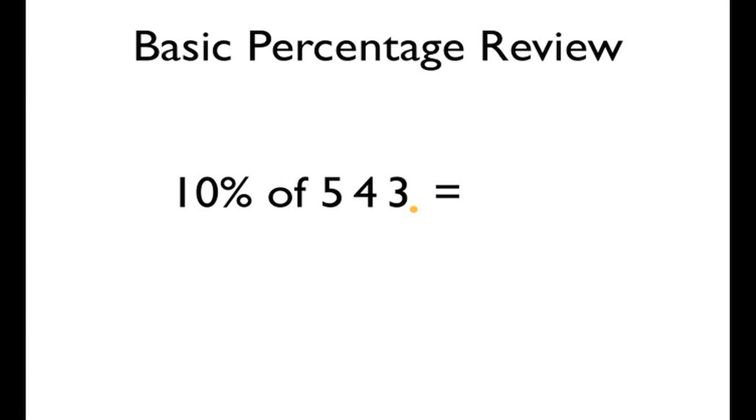So if we don't have a decimal, we'll create one, and we move it over one place. So 10% of 543 gives us 54.3. Pretty simple.